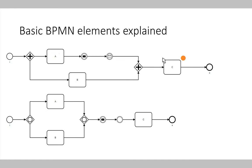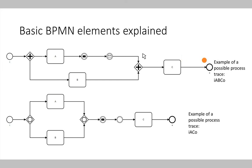If we write down the names of the elements through which the token moved, we get the process trace. For the parallel gateway example, one possible trace is: start event I, activity A, activity B, join gateway, activity C, end event O. Another valid trace is I, B, A, C, O — because in a parallel split, either activity can be executed first. So both I, A, B, C, O and I, B, A, C, O are valid process traces.